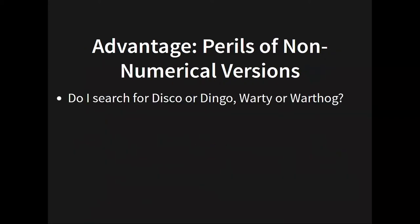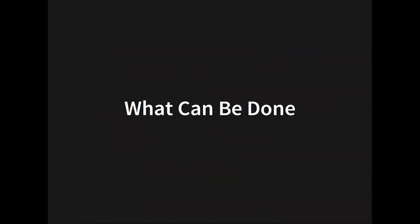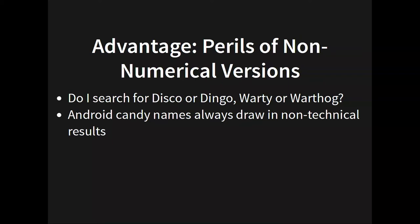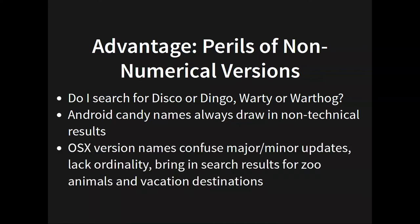The perils of non-numerical versions: searching for Linux stuff, you get 'disco dingo' and 'warty warthog.' The alliterative stuff is great for marketing, but maddening when you need to figure out what string to put in your apt config to upgrade versions on a third-party repo. Android's version names trample over trademarked candy names. OSX is no better — if you don't include 'OS X' in the search, you get various zoo animals and vacation destinations in your results.